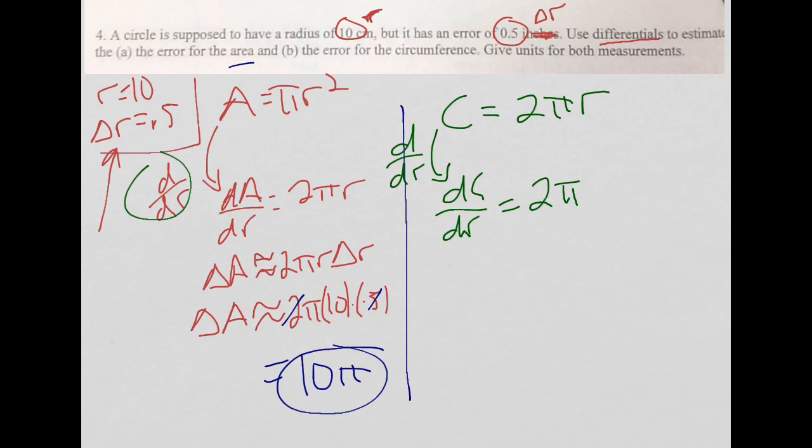It's going to be 1. So now I change over to deltas. Delta C is approximately 2 pi delta R.